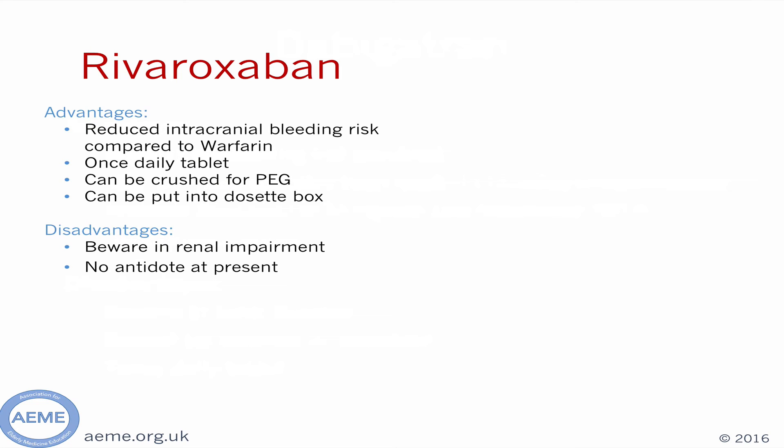Rivaroxaban is a NOAC taken once daily at a dose of either 20mg or 15mg, depending on renal function. It has a slightly reduced intracranial bleeding risk compared to warfarin; however, the risk of gastrointestinal bleeding is slightly higher. One major advantage over dabigatran is that rivaroxaban can be put into a dose set box and crushed for patients with PEG tubes. Disadvantages include the need to monitor renal function at least annually, and at present there is no available antidote.